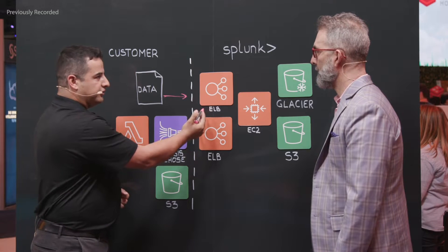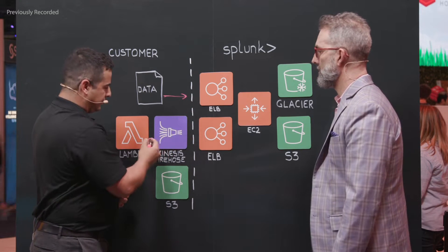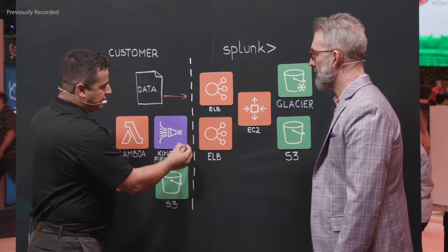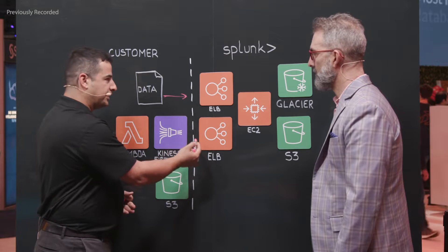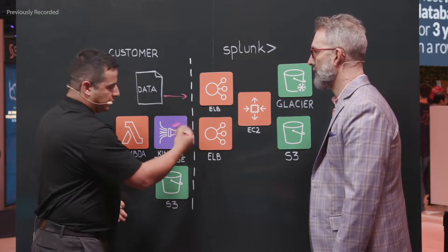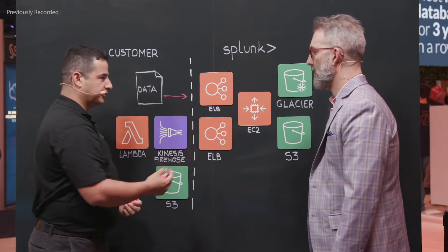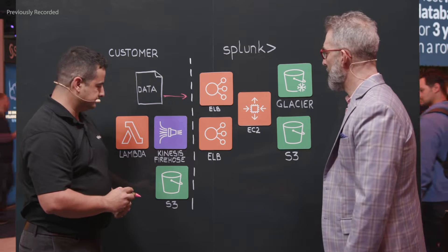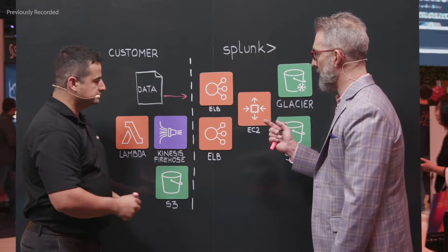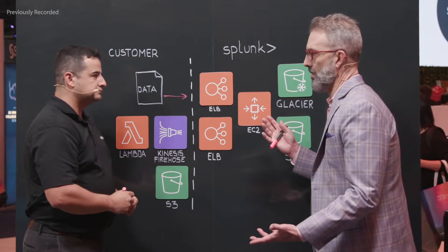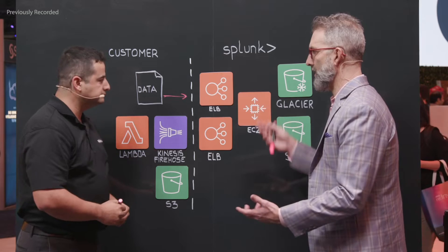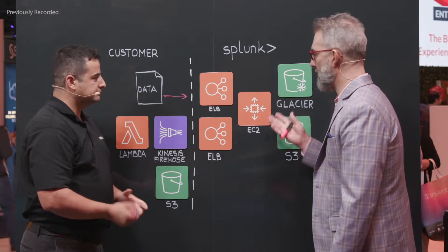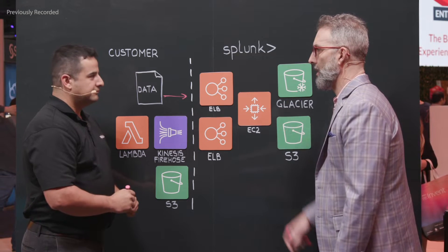Traditional HEC data comes in through an elastic load balancer. Kinesis Data Firehose goes through a second load balancer, because it does require sticky bits in order for the data to process properly for Firehose. So we've got two data paths coming in here, potentially — different data sources. What happens to it after that? I see we've got EC2 behind it.